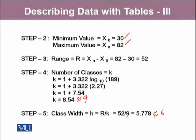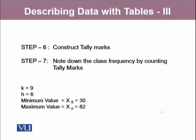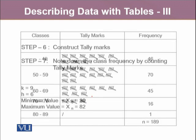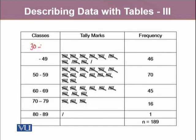We also have step 6, where we construct tally marks, and step 7, where we note down the class frequencies by counting the tally marks. In our data, K is 9 and H is 6, with a minimum value of 30 and maximum of 82. Since H and K are approximate values, we have the liberty to change them. For convenience, I will take the class interval height H as 10.